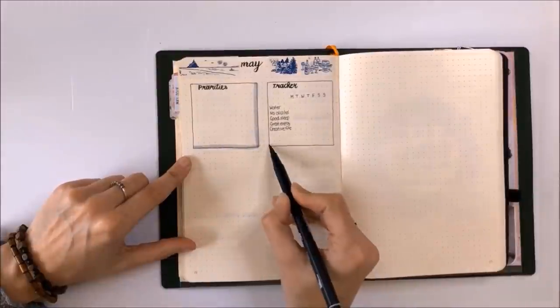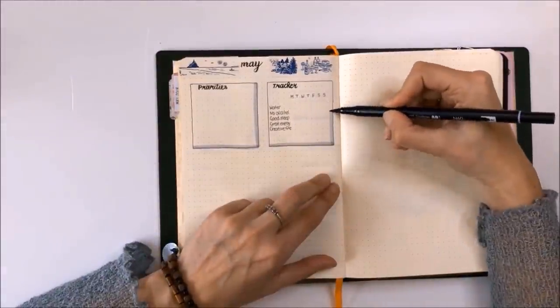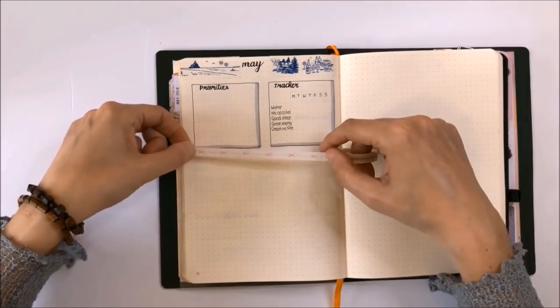I'm now using a Tombow ABT brush pen in N60 to highlight the boxes.